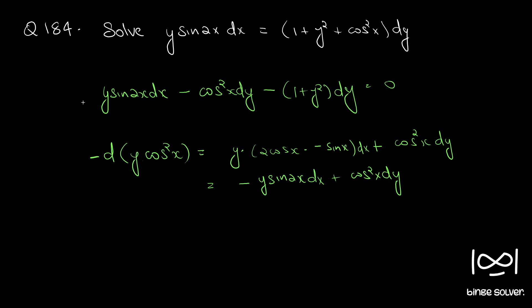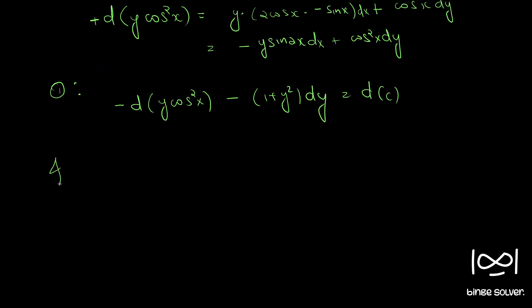So, this whole equation, equation 1 can be, say, call it 1. 1 can be written as minus of, so here, d cos square x, only this, so, minus d of y of cos square x minus 1 plus 1 plus y square dy equal to a d of a constant, we can write. So, integrating,